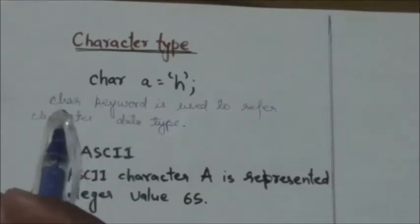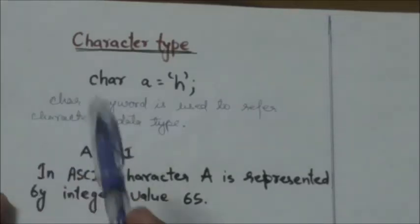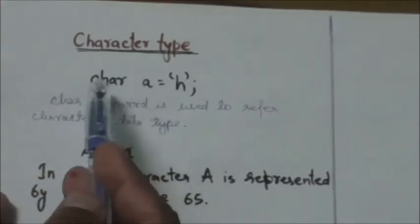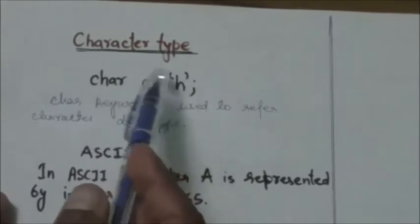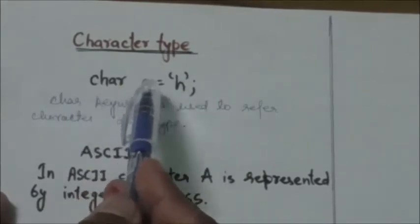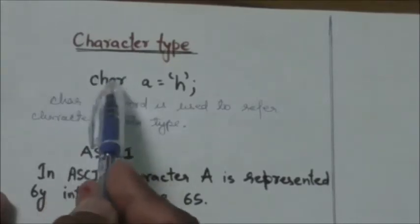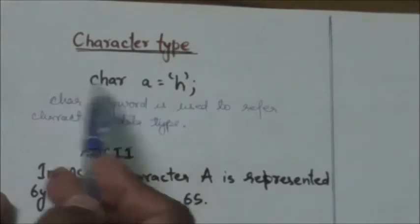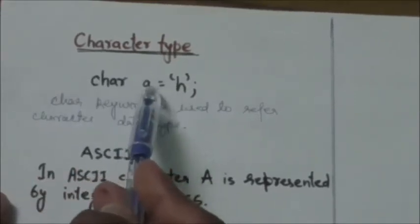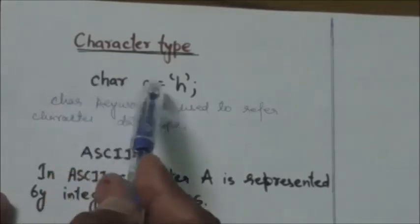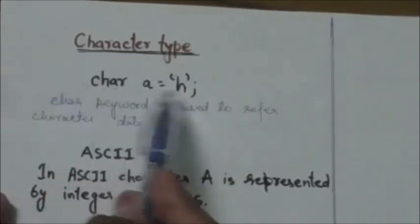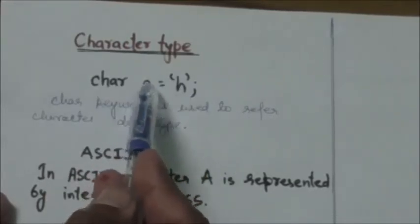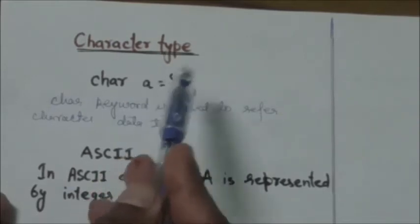Character data type allows a variable to store only one character. Now you can see this statement — this is a statement of a C program. In this statement we have declared a character type variable A. Here you can see the keyword char, so I have written char A, which means variable A is of character type. Along with the declaration, I have assigned a value to this variable A.